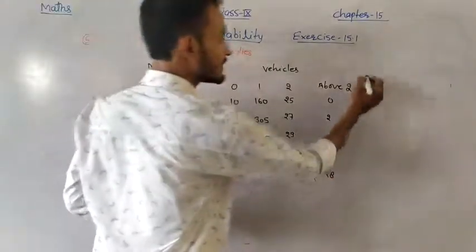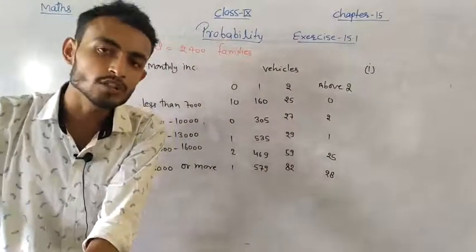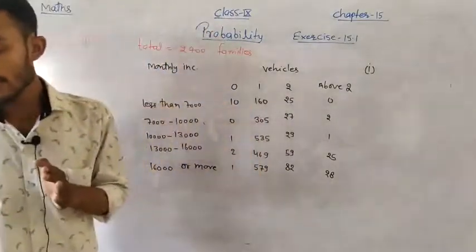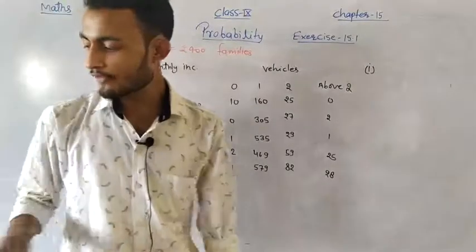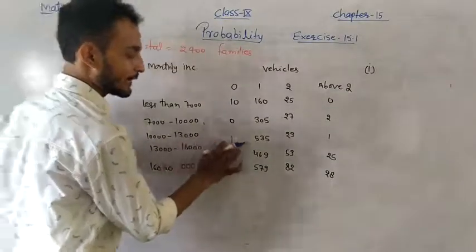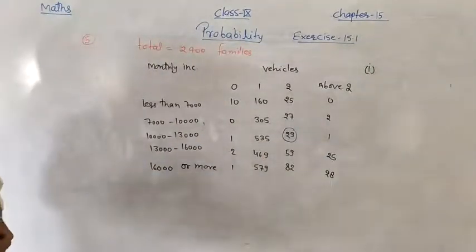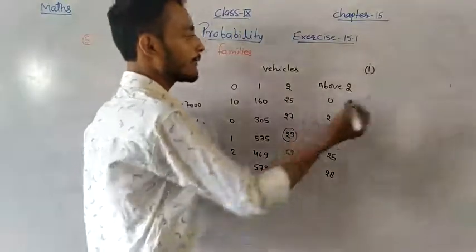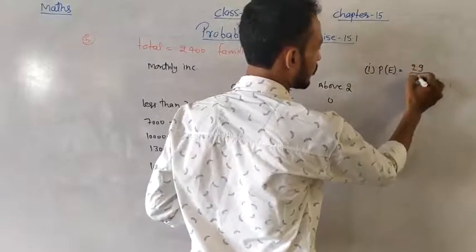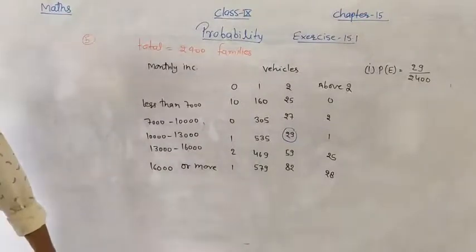Now the questions: First, find probability of a family earning 10,000–13,000 and owning exactly two vehicles. From the table, such families = 29. Total families = 2400. So probability = 29/2400.